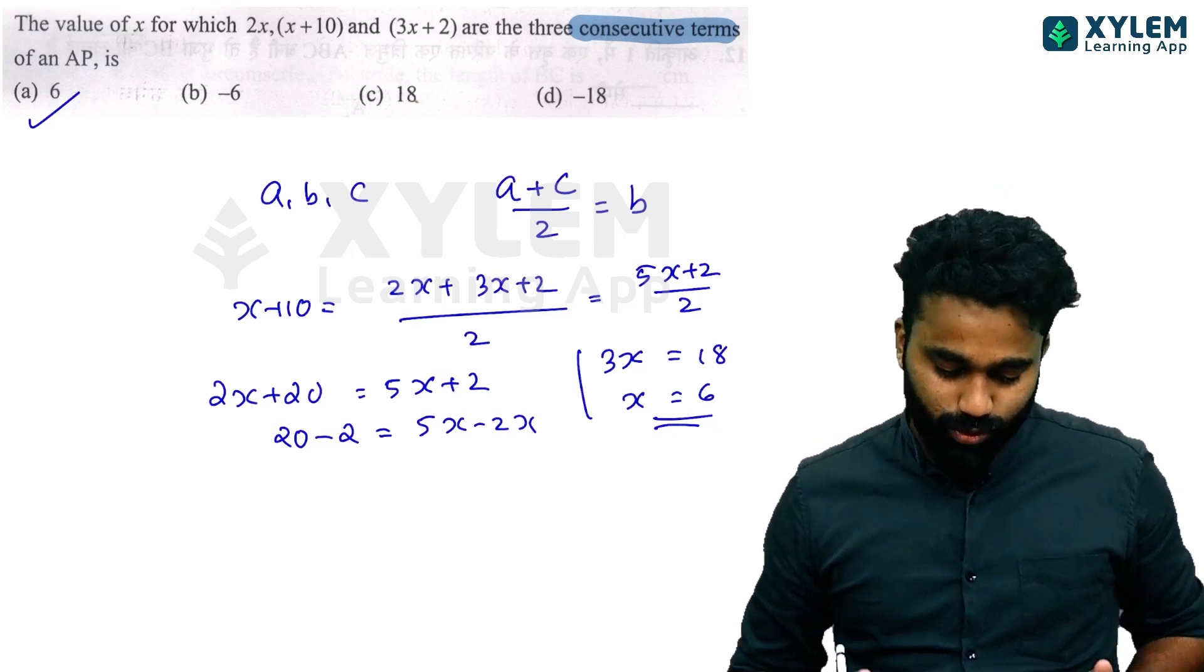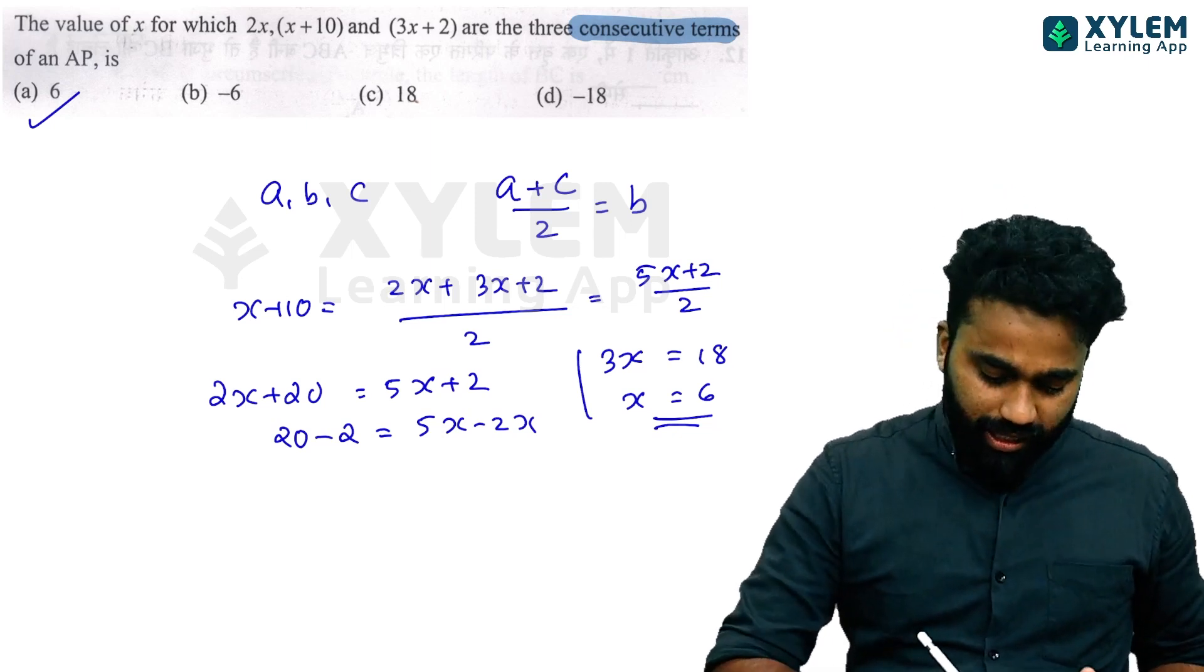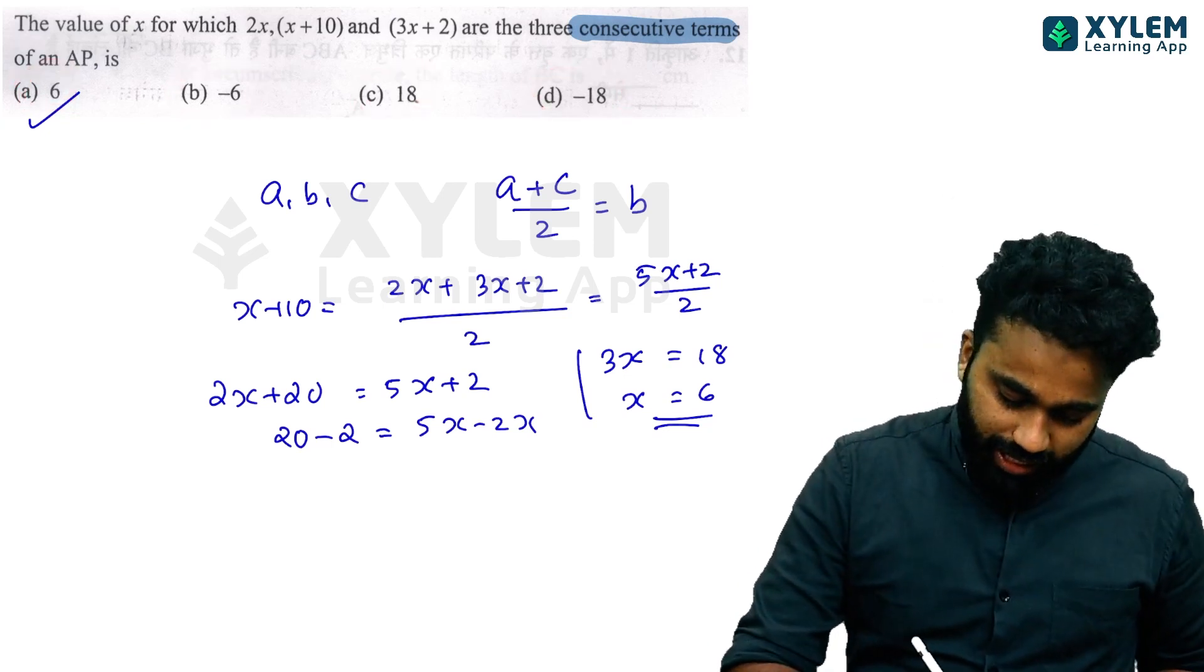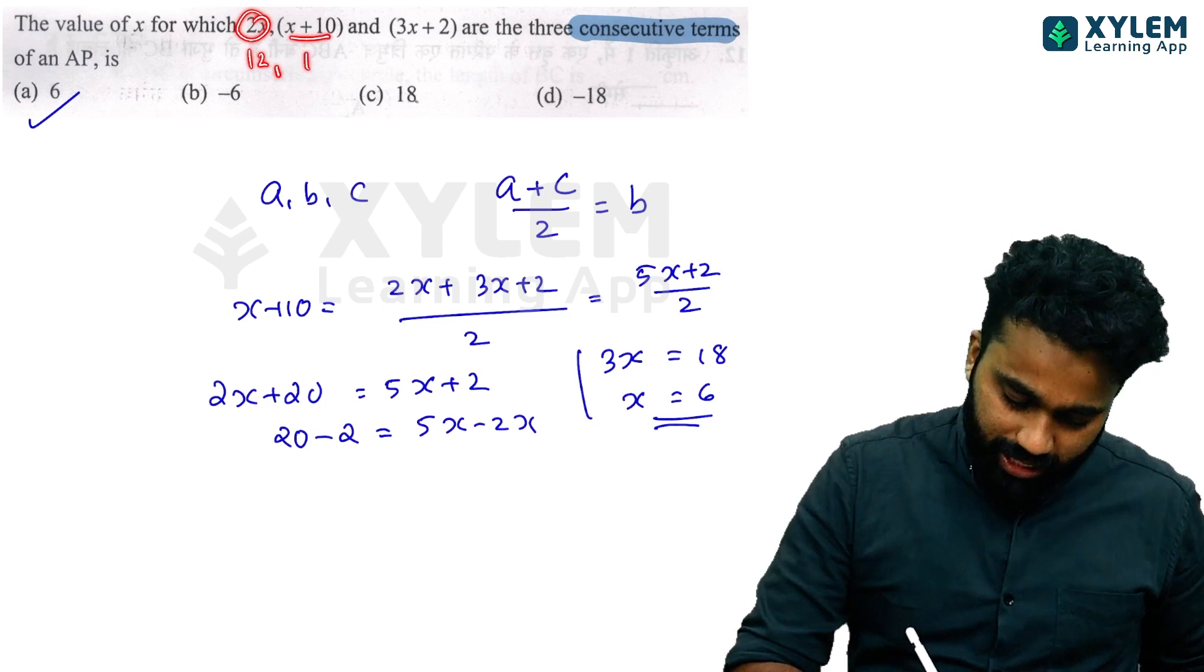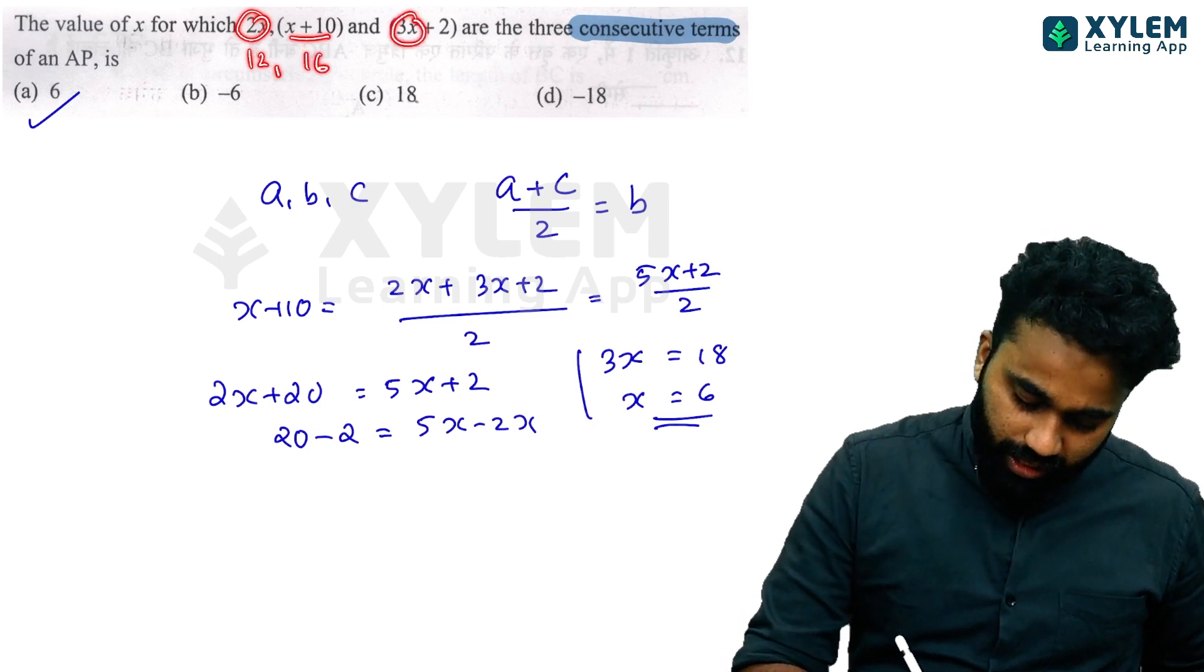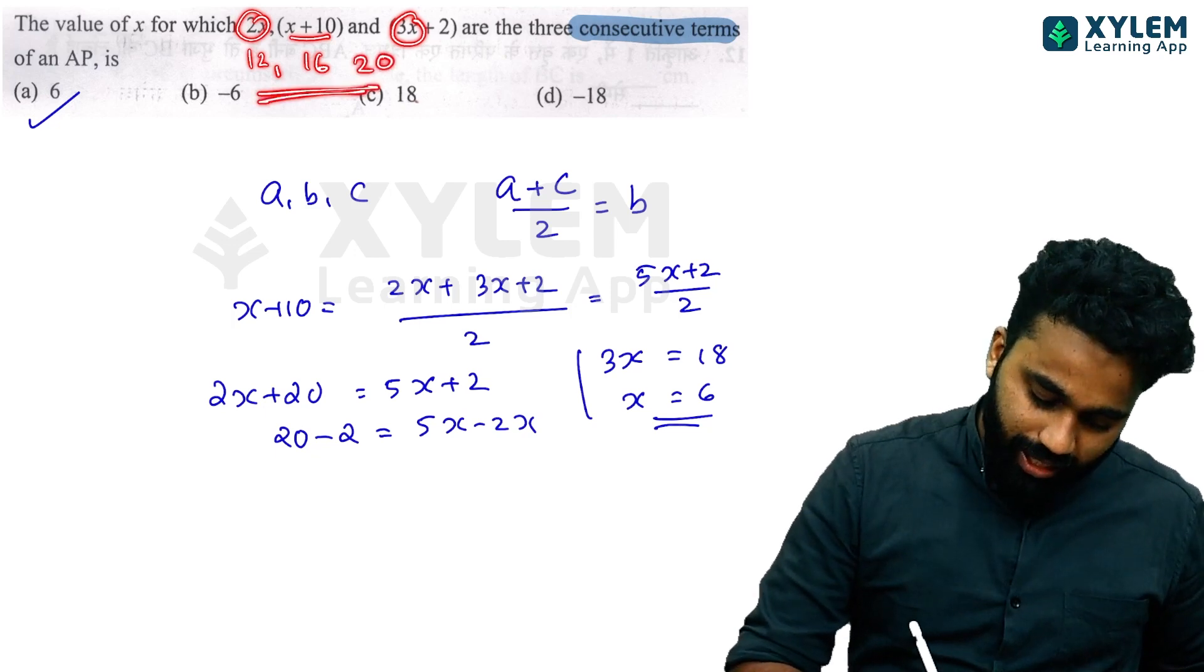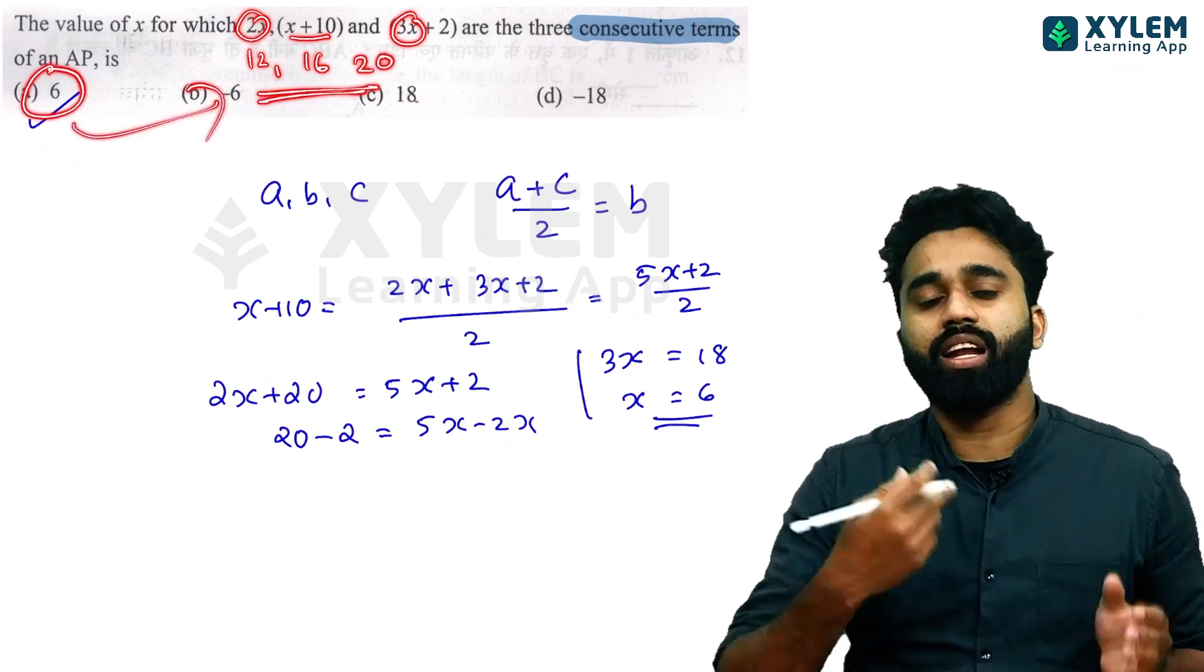You can verify by substituting x equals 6: first term is 2 times 6 equals 12, second term is 6 plus 10 equals 16, third term is 3 times 6 plus 2 equals 20. Yes, correct.